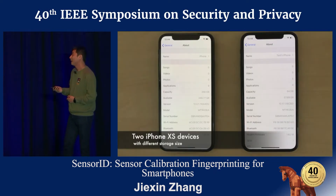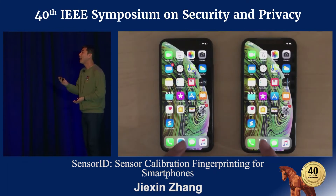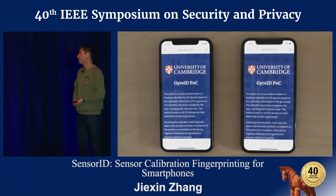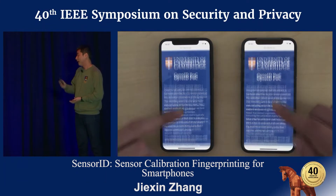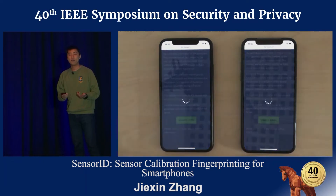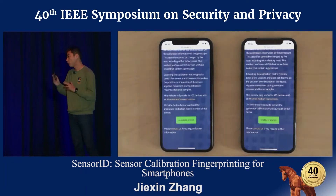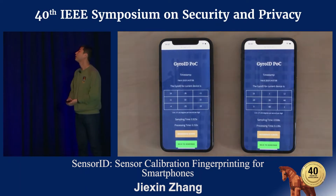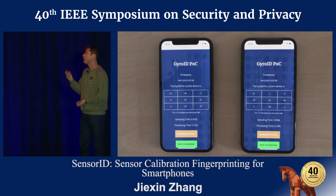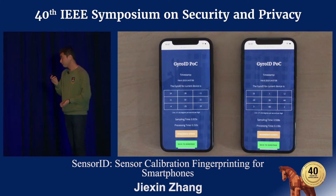Here's a demo of the attack. We have two iPhone XS devices on the desk, and this website generates the calibration fingerprint of the gyroscope for each device. As you can see, these two iPhone XS devices have a different fingerprint, which is a three-by-three matrix.